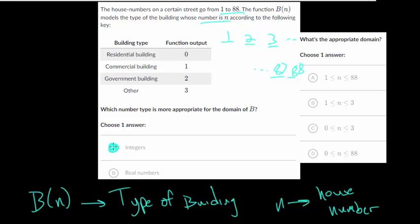So in this case, it's going to be integers, because integers, remember, are just whole numbers. So you don't have fractions or decimals, which is why you can eliminate the real numbers. And then what is the appropriate domain? Well, it goes from 1 to 88. So choice letter A would be the correct answer here.